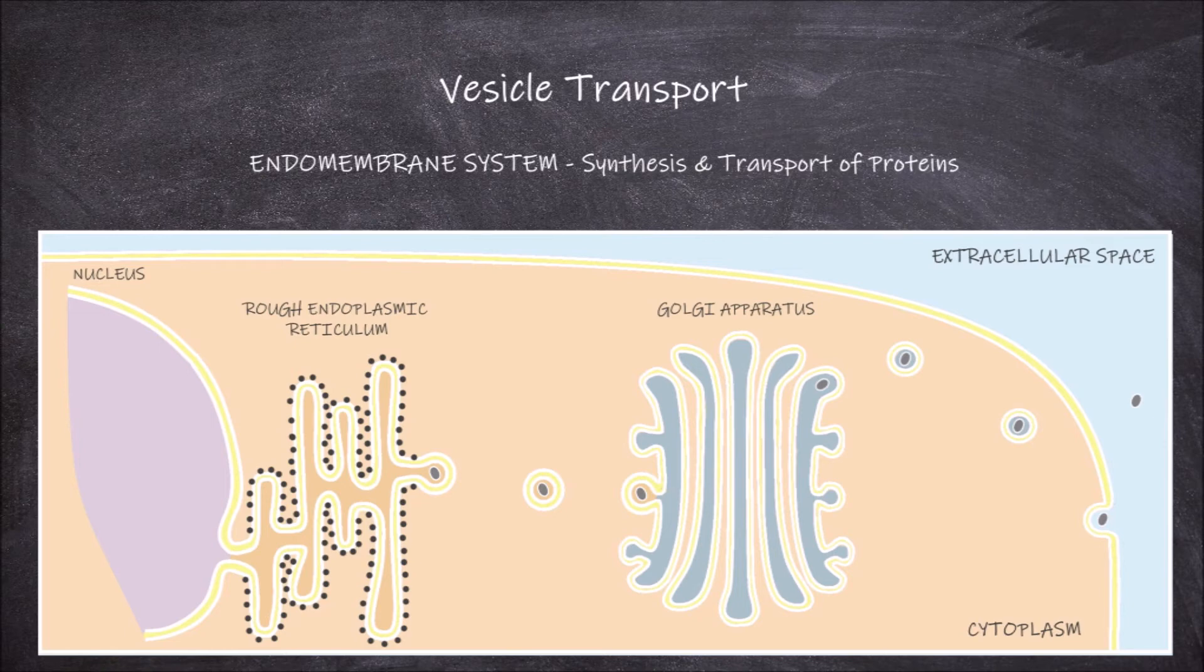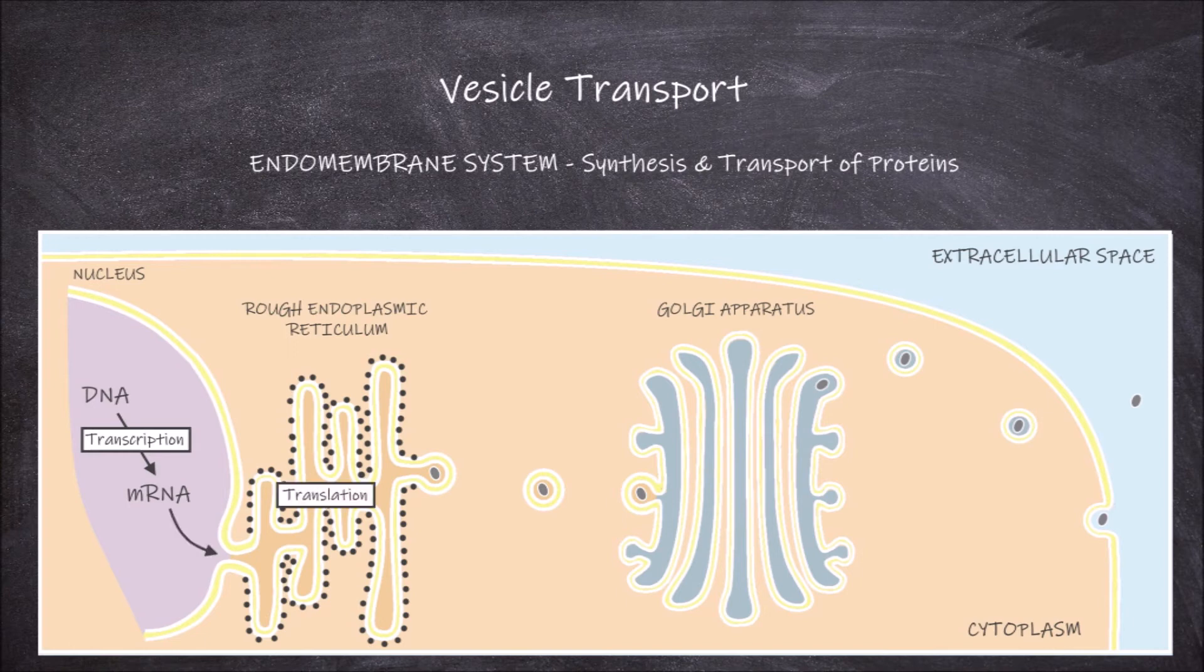This process of protein synthesis and transport in the cell starts with transcription of DNA in the nucleus, which creates mRNA. This mRNA then goes to the rough endoplasmic reticulum where it is translated by a ribosome to create a protein. This protein is then packaged into a transport vesicle where it is transported to the Golgi apparatus.